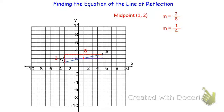The line of reflection is going to have a perpendicular slope to this line. To find the perpendicular slope, you need to take the opposite reciprocal. So we're going to take 1/4, flip it, and change the sign. If we flip 1/4 we get 4, and then to make it the opposite we change the sign. Therefore, the perpendicular slope is going to be negative 4.